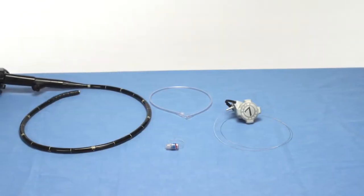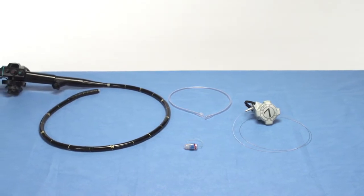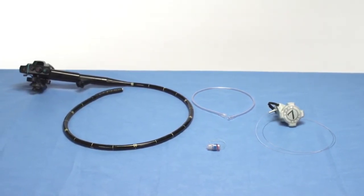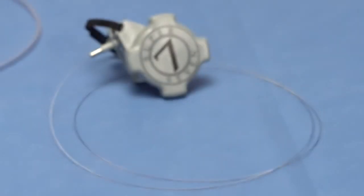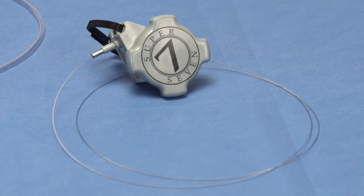Let's begin. Upon opening the package of the Speedband SuperView Super 7 device, you will find two components: the ligating unit and the handle unit with tripwire and scope fastener.